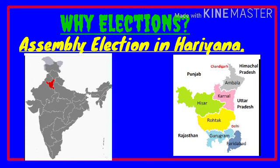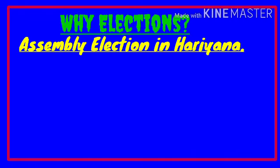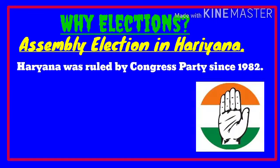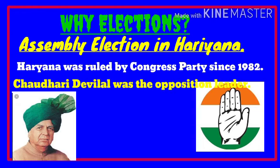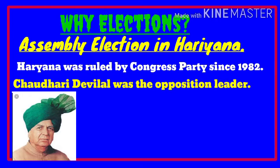In 1987, Haryana state had been ruled by the Congress party since 1982 — the party of Rahul Gandhi and Sonia Gandhi. During that time, Chaudhary Devi Lal was the opposition leader. Opposition leader means — just like at present in Karnataka, Siddaramaiah is the opposition leader — during that time, Chaudhary Devi Lal was the opposition leader of Haryana.